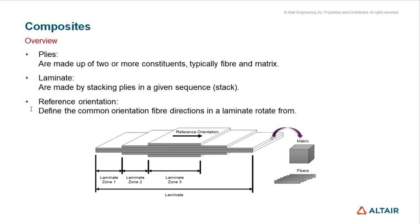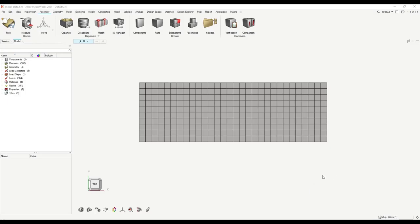In the following minutes, I will tell you how to model composites with OptiStruct. We will take this metal plate example from before, delete the material and properties, and define our composite properties on this plate. Back in HyperMesh, the first thing we have to do is save our model — this MetaSheet model.